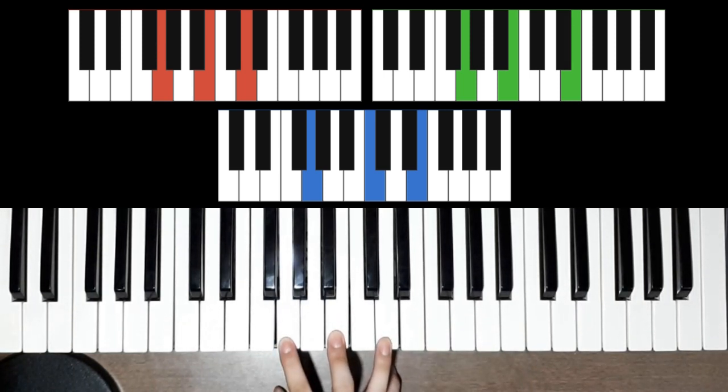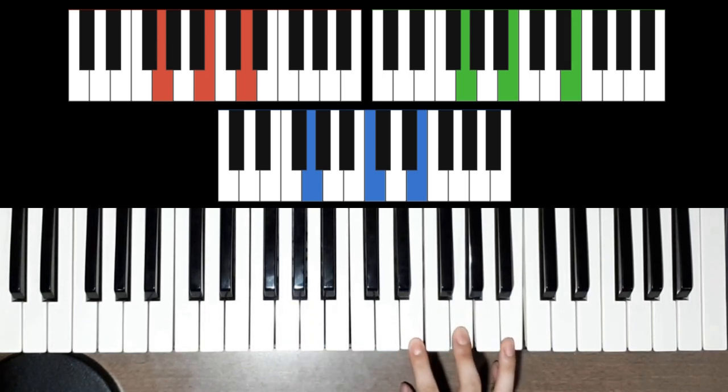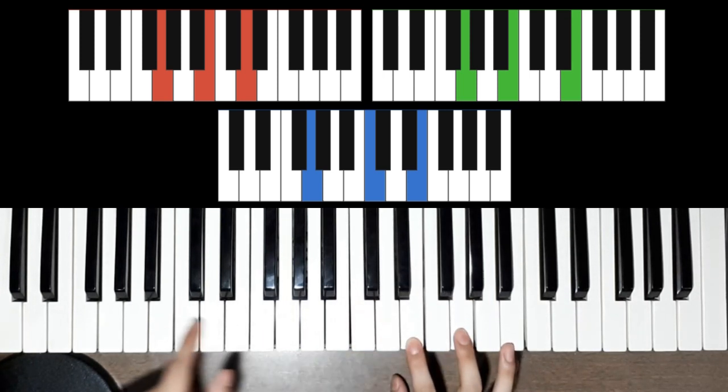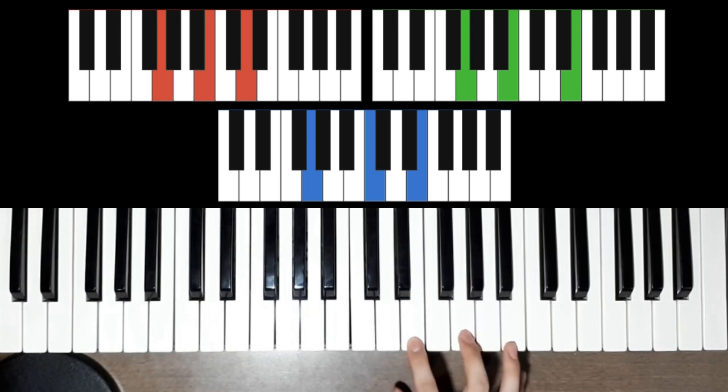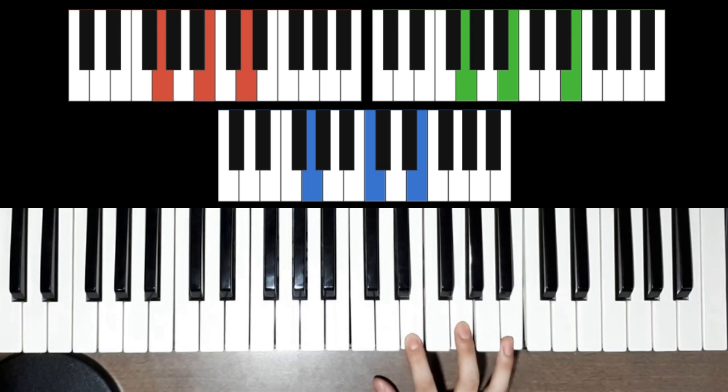So instead we're gonna just do inversions, chord inversions. That just means playing the same notes. So playing this one, this one, this one. You could find this note up here or down here, all the way down here. So an inversion just means choosing the same notes but from other places from the keyboard. Instead of playing this one we could be playing this one. It's just not really convenient. Let me choose different inversions that will make it easier for me.